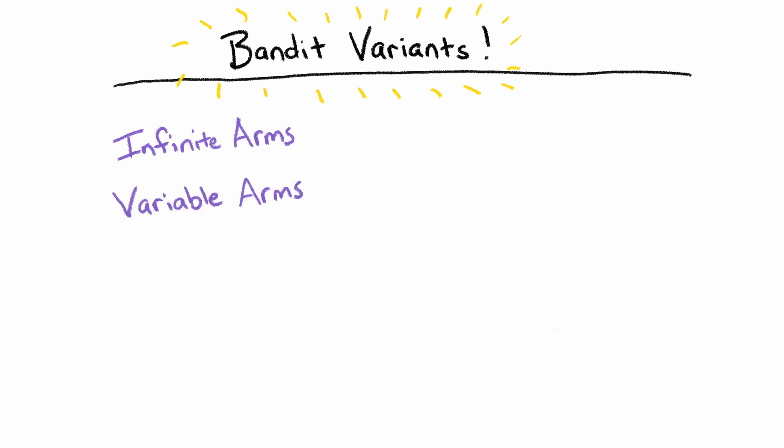Up until now, we have presumed that the distribution of rewards from each slot machine is constant. But in real-world problems, these might change over time. How might we adapt our strategies to handle that variability?